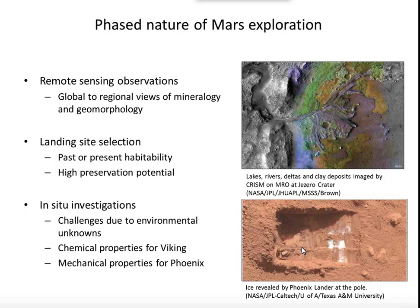The exploration of Mars by necessity operates in a very phased nature, punctuated by missions which are delivering increasingly large volumes of higher and higher resolution data. Earth-based observations give us a sense of global views of the surface of Mars, and then orbital missions move forward to provide regional views of mineralogy and geomorphology. The views gained from orbital missions are used to provide information that feeds into landing site selection, and in recent years this has really been driven by the desire to find places on the surface that could possibly represent sites of past or present habitability, generally indicated by interactions of minerals or geomorphological features that have been influenced by water.